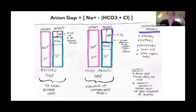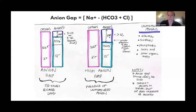For high anion gap metabolic acidosis, causes include DKA, lactic acidosis, methanol, and ethylene glycol. What happens is that unmeasured anions — like lactate, ketones, albumin, sulfates, phosphates — are formed and not captured in the standard equation, creating a large gap. For example, in lactic acidosis the bicarb is used up to buffer, and the lactate anions are unmeasured, producing a high anion gap.